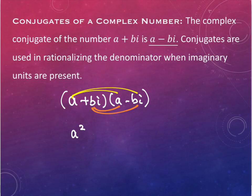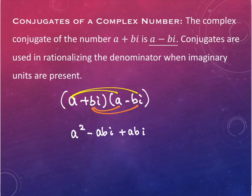Then I have a times negative bi, which gives me negative abi. The orange term is now on the bottom. So I have bi times a, which in alphabetical order is positive abi. And then when I do the last terms, I get negative b squared i squared — because one's positive and one's negative.